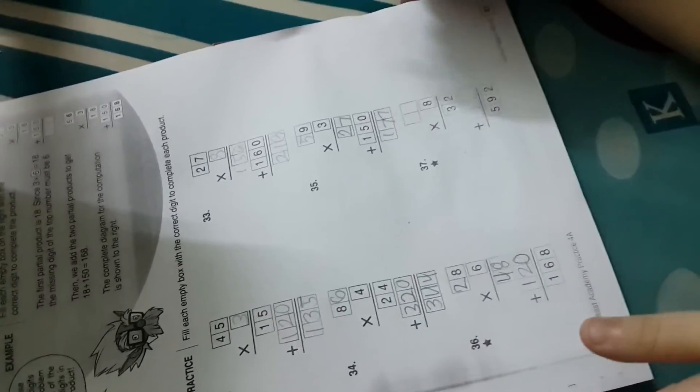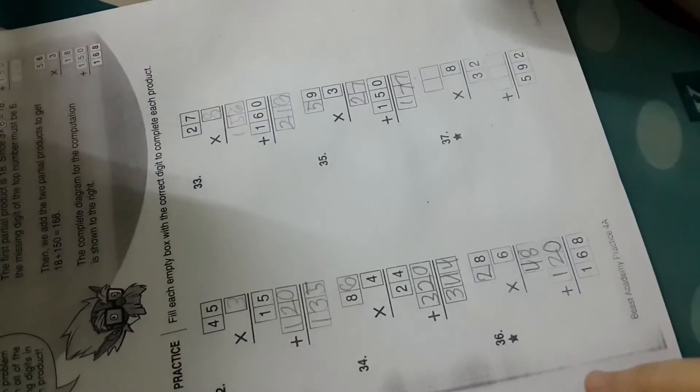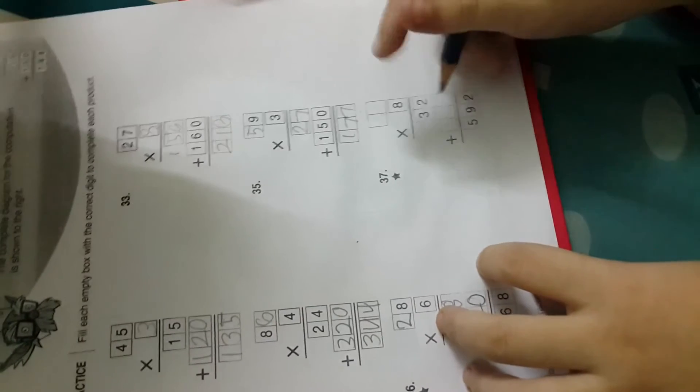Cool! You want to do this other one on the camera? Yeah, okay, let's do this. It's a one-star problem, that'll be fun. And what do you think the number is in the ones position there? Eight times some two-digit number is 592.